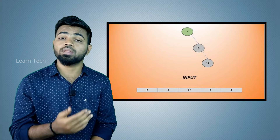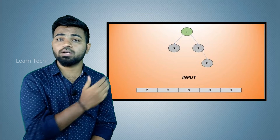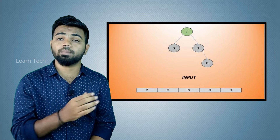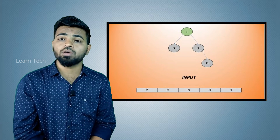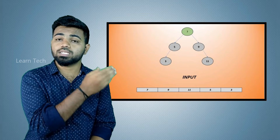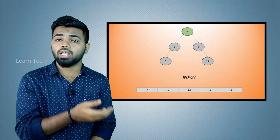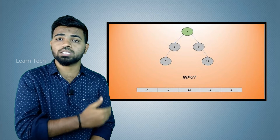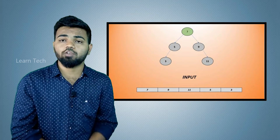If we have the next number 5, check the root 7 — 5 is less than 7, so it goes to the left-hand side. Then we have 3: 3 is less than 7, go left to 5, and 3 is less than 5 so it goes left of 5. Now we have formed the Binary Search Tree structure.